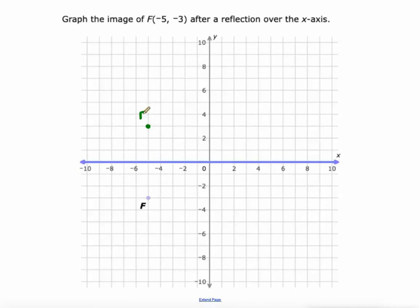There's f and we would see the coordinates. It's at negative 5, positive 3. So the x value didn't change, but the y value did when we reflect over the x-axis.